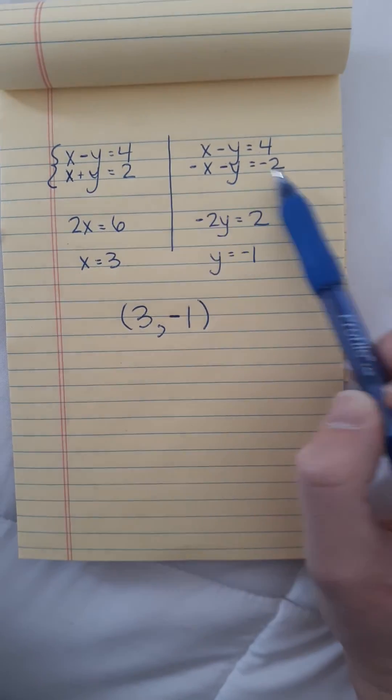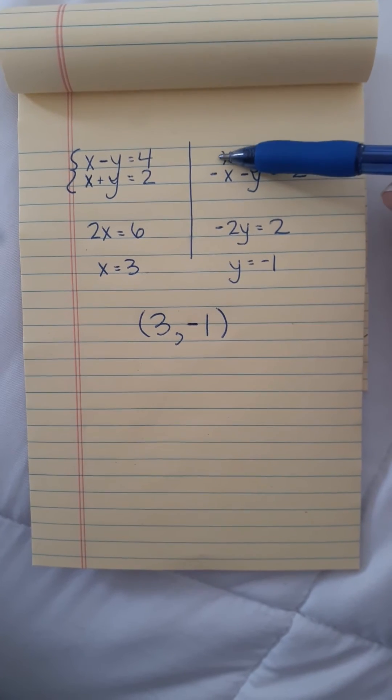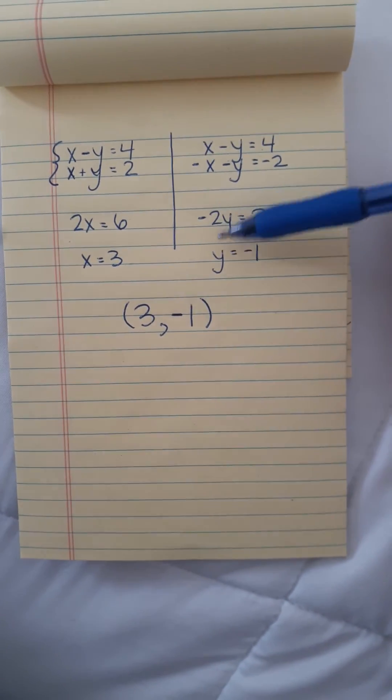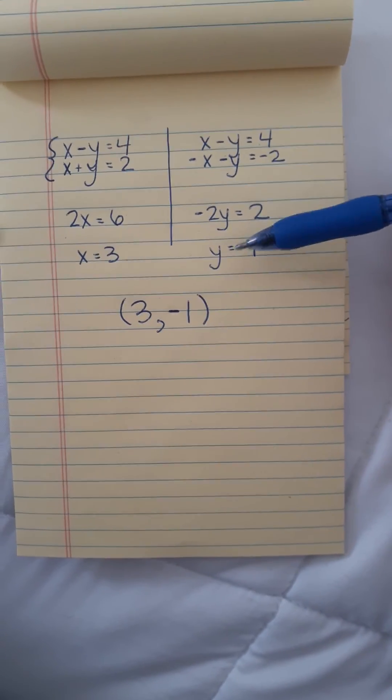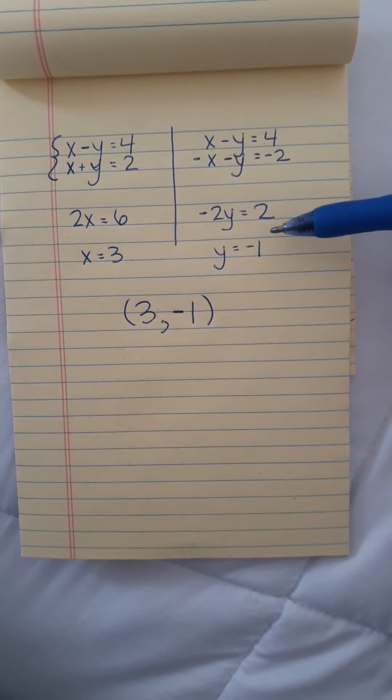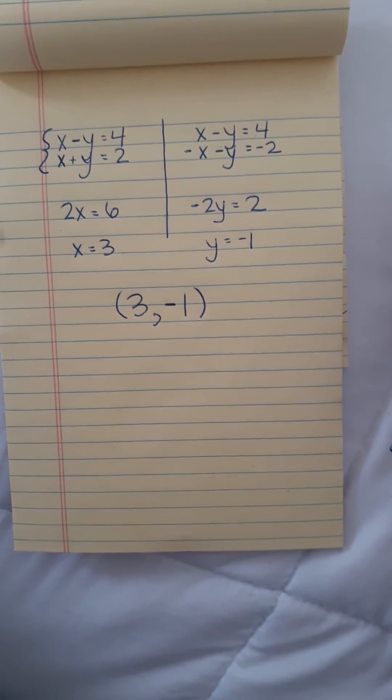So now when I combine them, the x's cancel instead, and I'm left with negative 2y equals 2, because 4 minus 2 is 2. When I divide the negative 2 off, I get y equals negative 1.